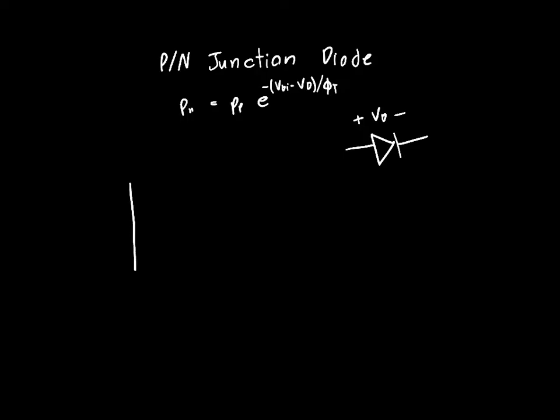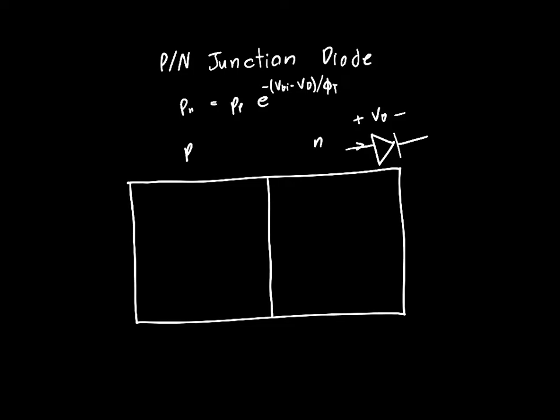In this video we're interested in solving the continuity equation for the PN junction diode, figuring out exactly what current flows through this diode that results from the voltage we apply. If we draw out the PN junction, we've got our acceptors on the left hand side, our donors on the right hand side, and collectively they form the depletion region. On each side the depletion region is assumed to be abrupt with a certain width on each side depending on the concentration of dopants. We call this width X_N and X_P.